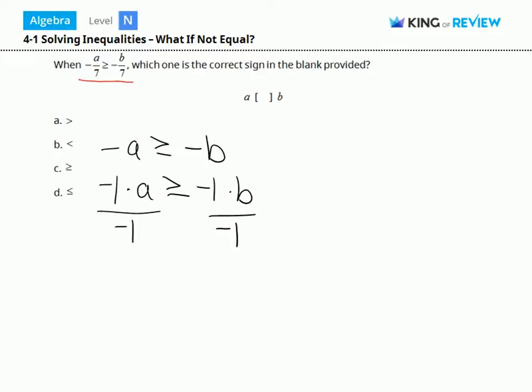the negative 1's cancel out, and because we divided by a negative number, the sign will switch directions. We have a is less than or equal to b.